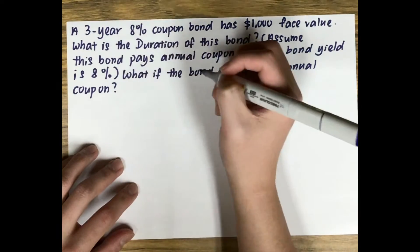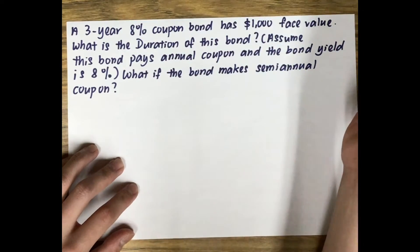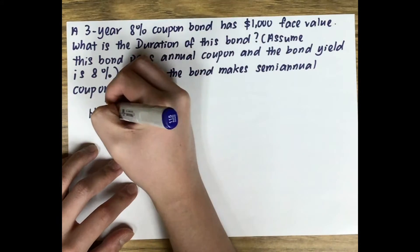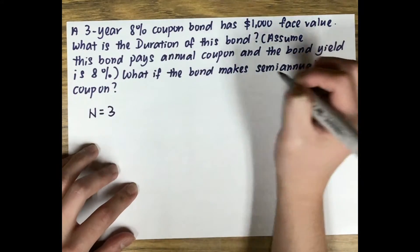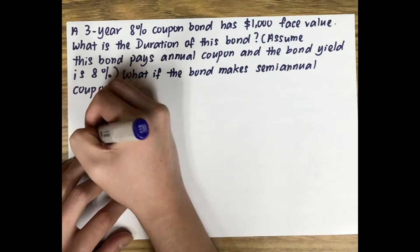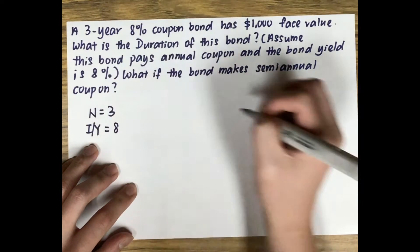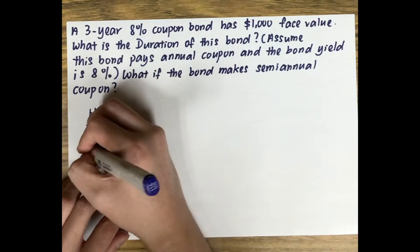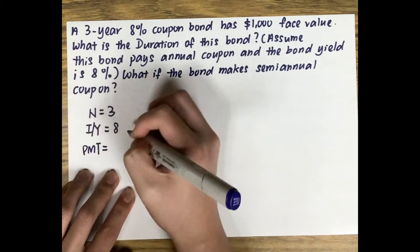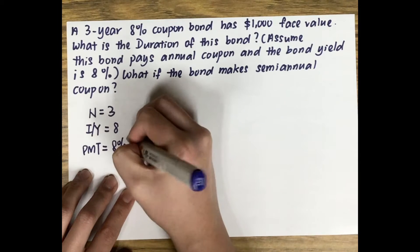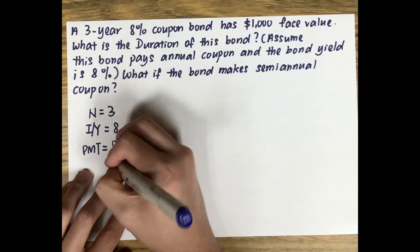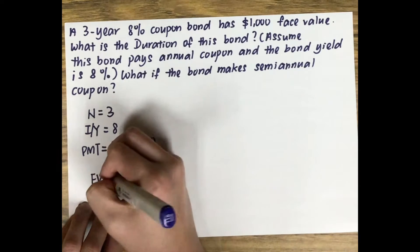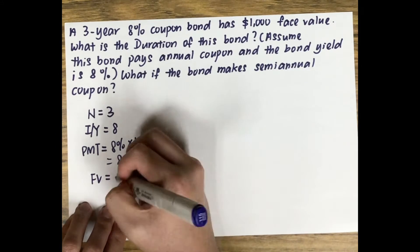For the three-year, 8% coupon bond with a face value of $1,000, we enter N = 3, I/Y = 8 because the yield to maturity is 8%, PMT = 8% times $1,000 = $80, and FV = $1,000.